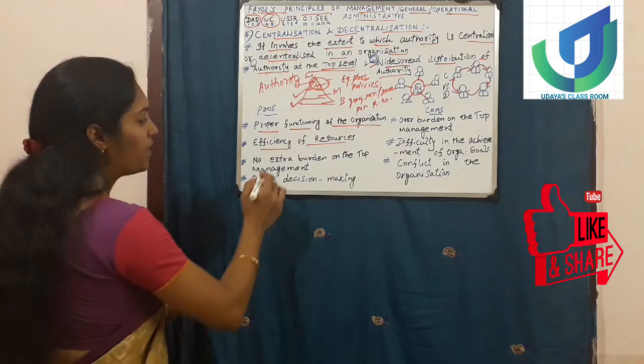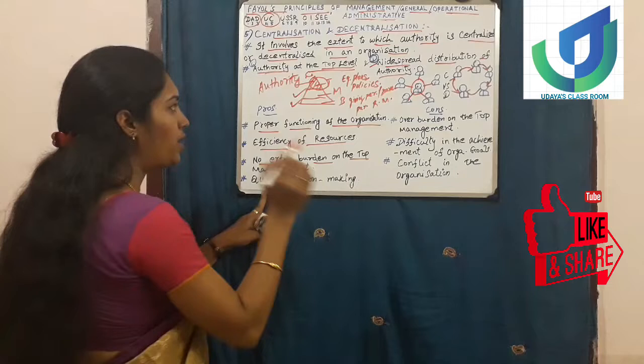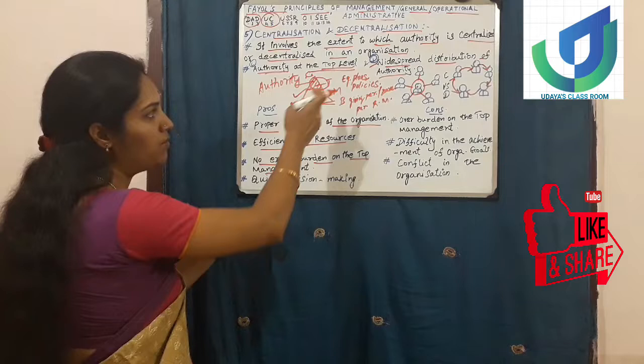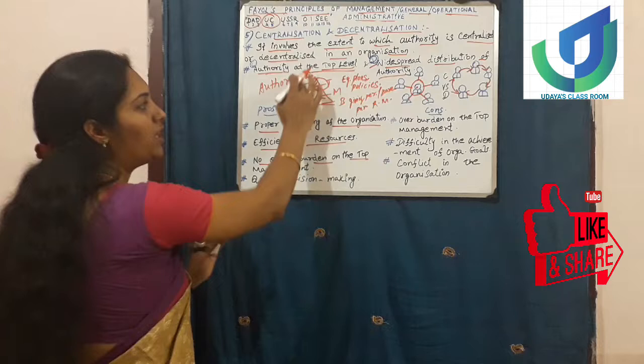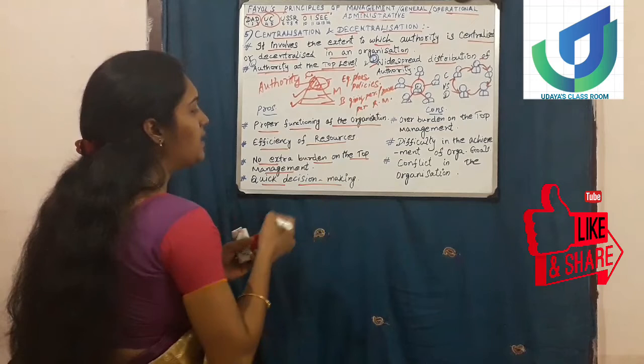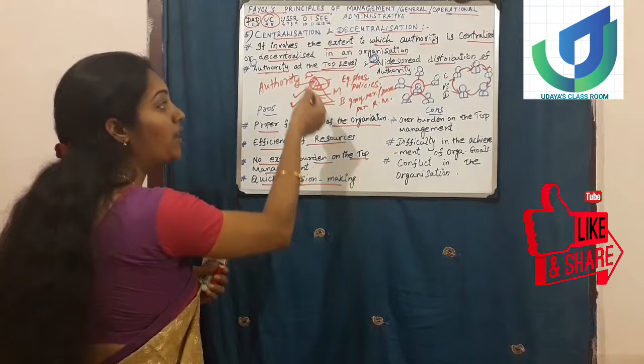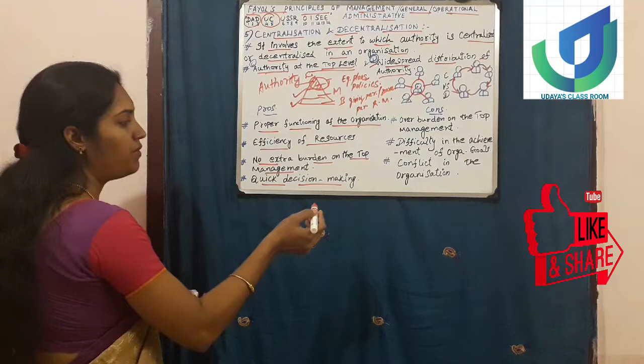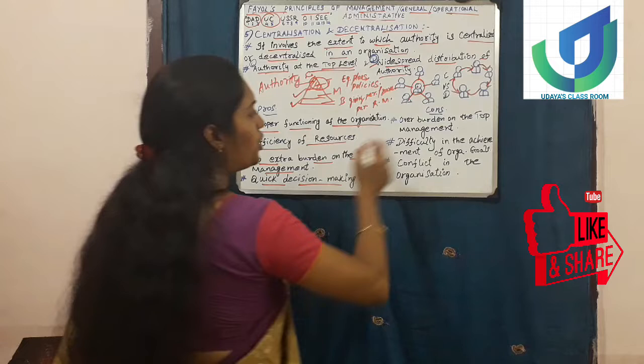The next pro is efficiency of resources - resources would be used efficiently. There is also no extra burden on the top management, because if the top level management concentrates only on policy framing and important things, while other petty things are handled at other levels through decentralization, the burden will be less. Then, quick decision making - if all authority is taken up only by the top level management, even for giving permission to an employee, decision making will become a prolonged process.